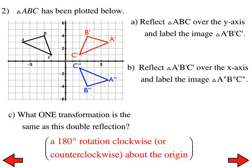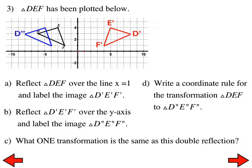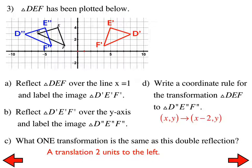For number 3, take triangle DEF, reflect it over the line x = 1 and label it D prime, E prime, F prime. Then reflect that over the y-axis and label it D double prime, E double prime, F double prime. What one transformation is the same as this double reflection? That's a translation — 2 units to the left from the original pre-image. As a coordinate rule, (x, y) maps to (x − 2, y).